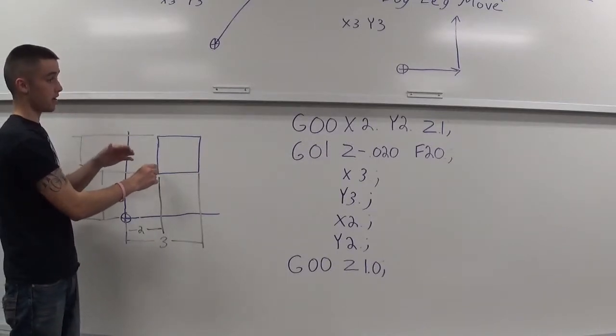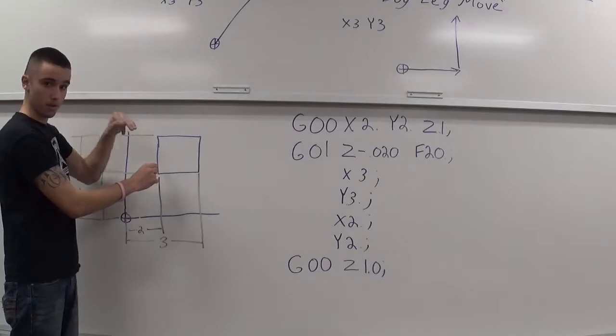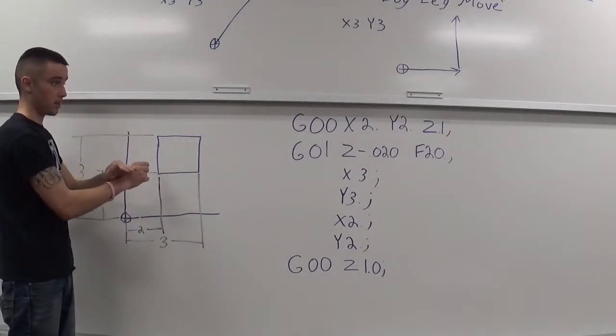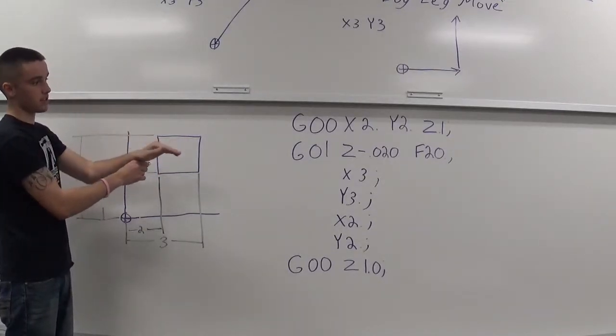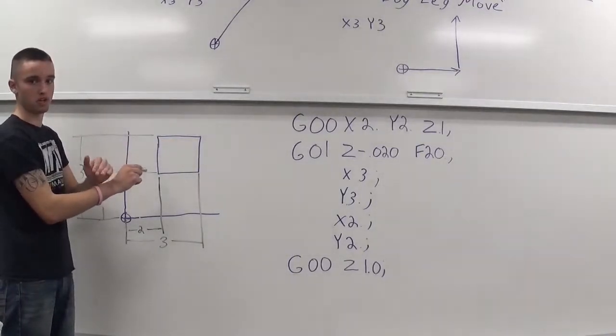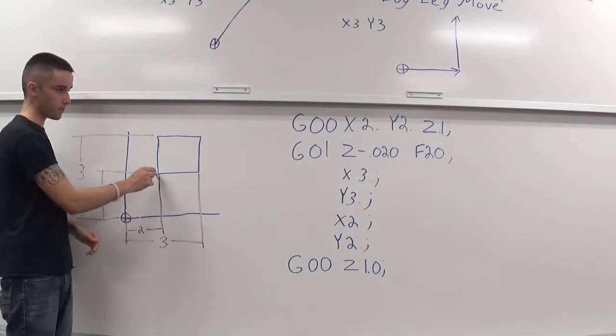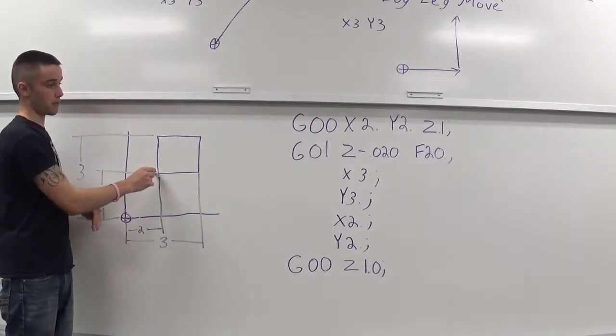Now, I'm calling up a G01. Calling up the G01 now is turning off the G00. So, now I'm in a controlled straight line movement. And I'm moving in the z-axis to a z of negative 20 thou, at a feed rate of 20 inches per minute. So, now, I'm actually into the work piece.